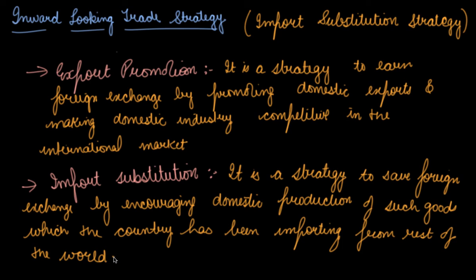Domestic industry is offered protection from foreign competition through import restrictions and import duties, so that foreign products should not come into India. The Indian government imposed heavy import duties and import restrictions so that domestic industry would not face competition from foreign industries. These are the two main principles of this strategy: export promotion and import substitution.